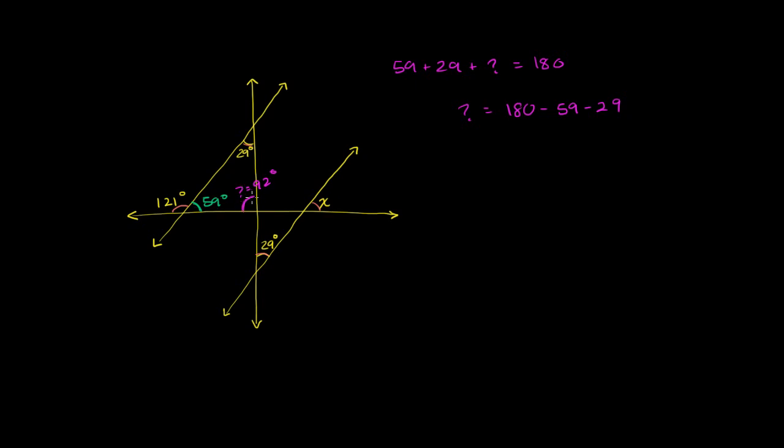Well, if this right here is equal to 92 degrees, this angle right here is vertical with that angle. So it is also going to be equal to 92 degrees. And now we're getting pretty close. We can zoom in on this triangle down here. Let me save some space here. So let me just say that over there is also going to be 92 degrees.